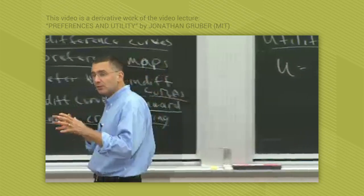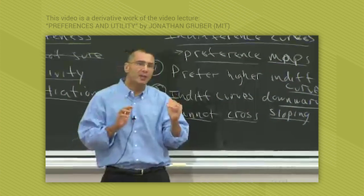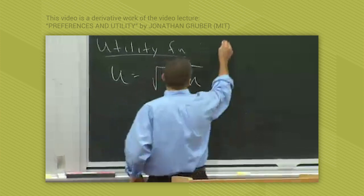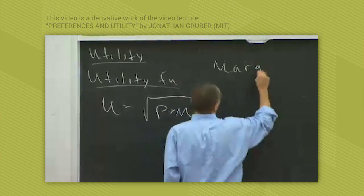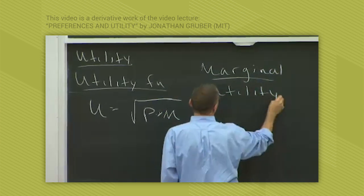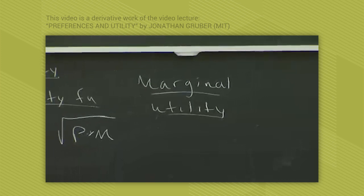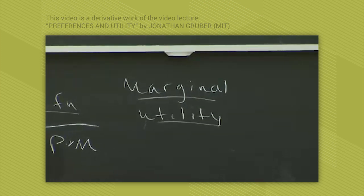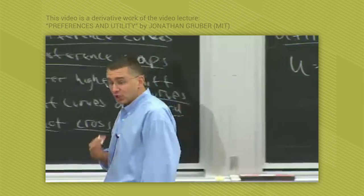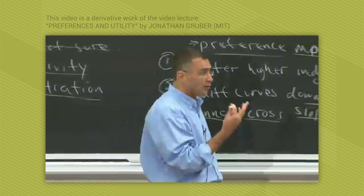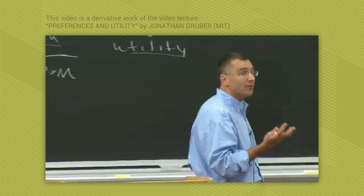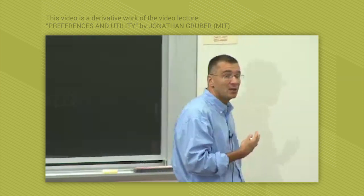The key concept — the single most important concept for consumer theory, for understanding how consumers make decisions — is the concept of marginal utility. We'll talk a lot this semester about marginal this and marginal that, and this is our first example. Marginal utility is how your utility changes with each additional unit of the good, or the derivative of the utility function. In calculus terms, marginal utility is the derivative of the utility function with respect to one of the inputs.